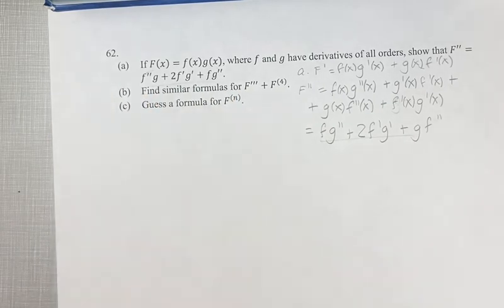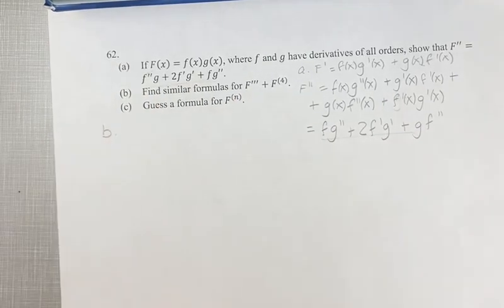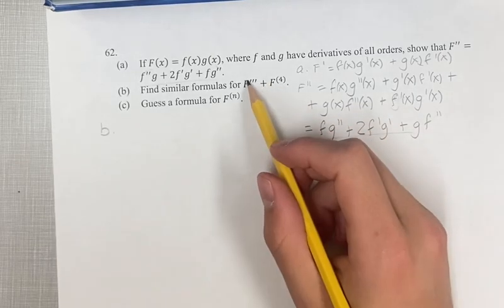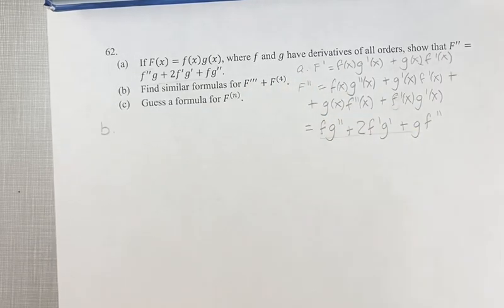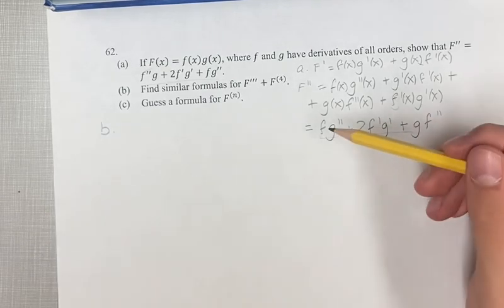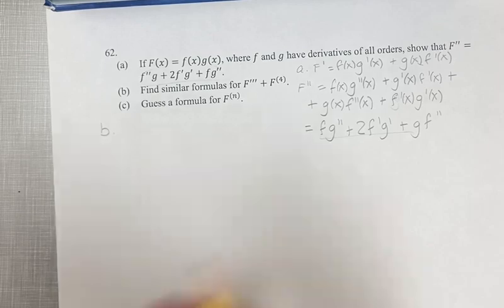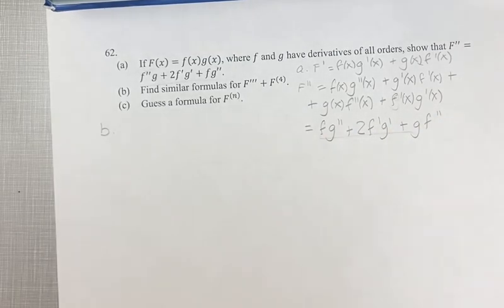So in part b, it's asking us to find similar formulas for the third and fourth derivative. This is just going to continue to get more complicated. For the third derivative, we basically have three products.